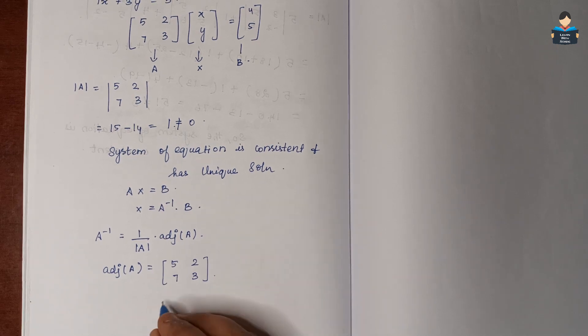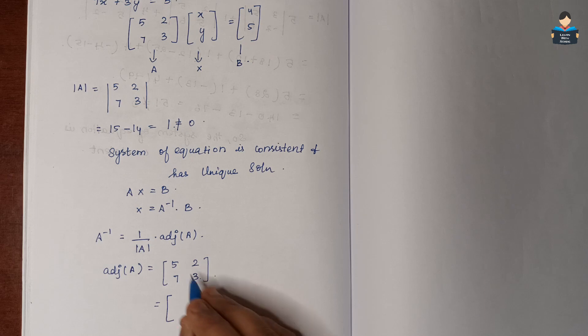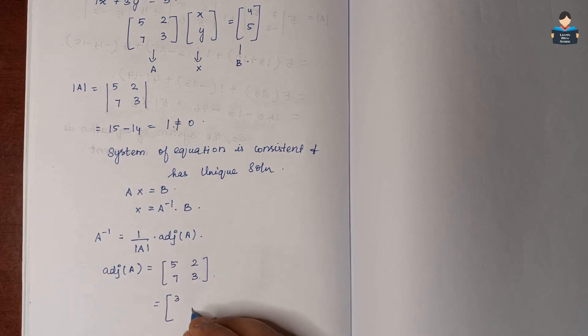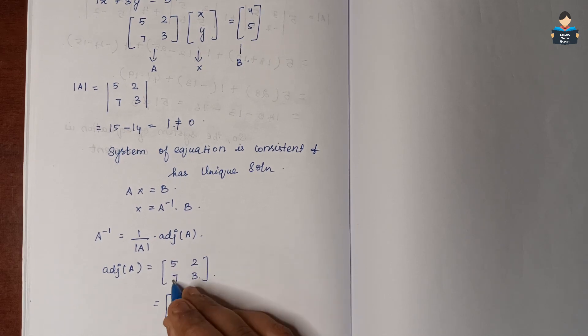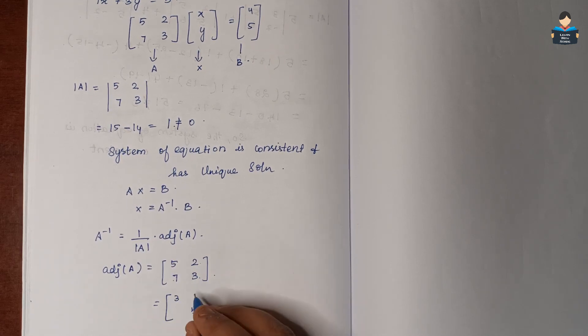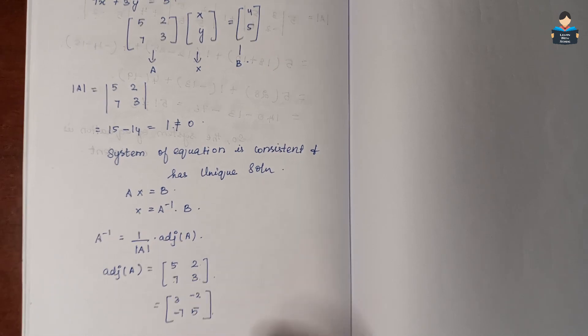Adjoint of A, we will find out. We interchange the diagonal elements: here 3, here 5. And sign change for the off-diagonal elements: so minus 2, minus 7.